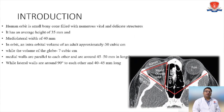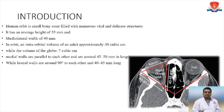Introduction. The human orbit is a small bony cone filled with numerous vital and delicate structures. It has an average height of 35 mm and mediolateral width of 40 mm. The intraorbital volume of an adult is 30 to 35 cubic centimeters, while the volume of the globe is 7 cubic centimeters. Medial walls are parallel to each other and are 40 to 55 mm in length, while lateral walls are 90 degrees to each other and are 40 to 45 mm long.